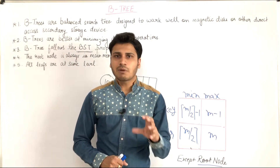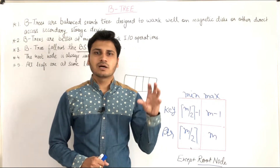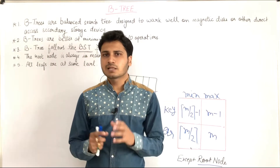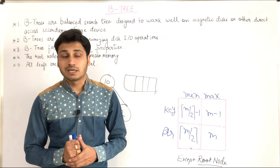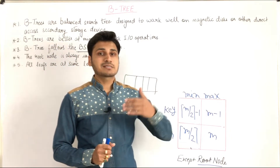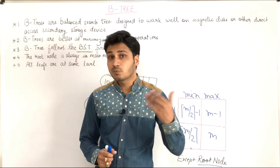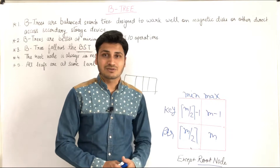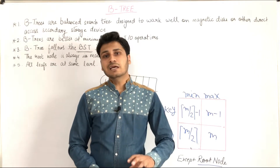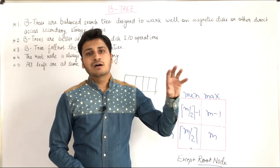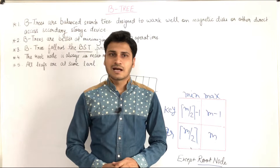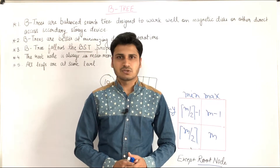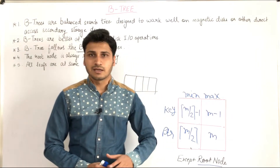We store a large amount of data in secondary memory because the storage of main memory is very limited — it is a very limited size. We can increase the size of the main memory, but it is very costly. So we use secondary memory, hard disk, to store large amounts of data.